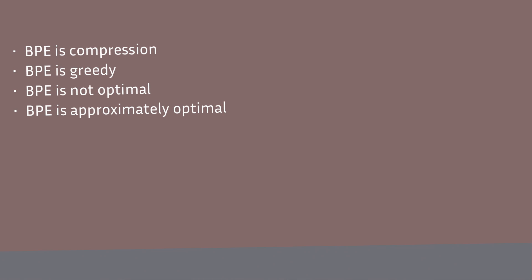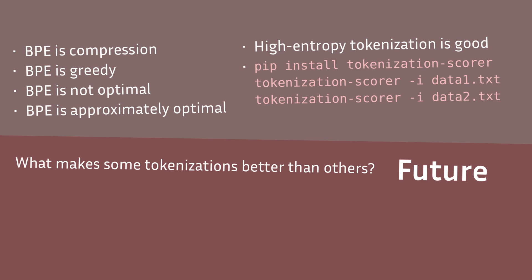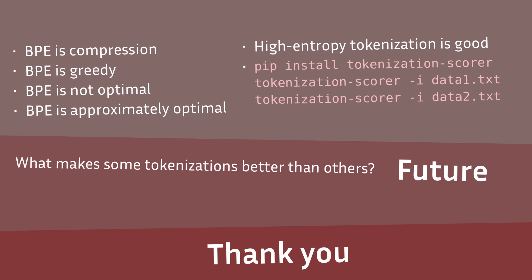To summarize, we learned a lot about BPE — its formalization, that it's all compression under the hood, and that it's approximately optimal. From the tokenization part, we found a reliable metric that tells you which tokenization is the best one prior to training your expensive models. Looking forward, there is still a lot to explore — not just performance, but also aspects of multilinguality and bias. Thank you for listening.